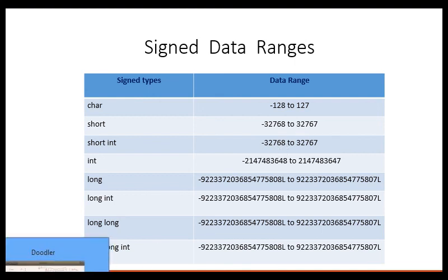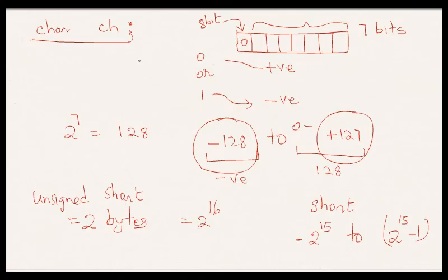Let's wrap up this video by saying that char data types can hold a value, any value from minus 128 to plus 127. And unsigned char holds from 0 to 255.